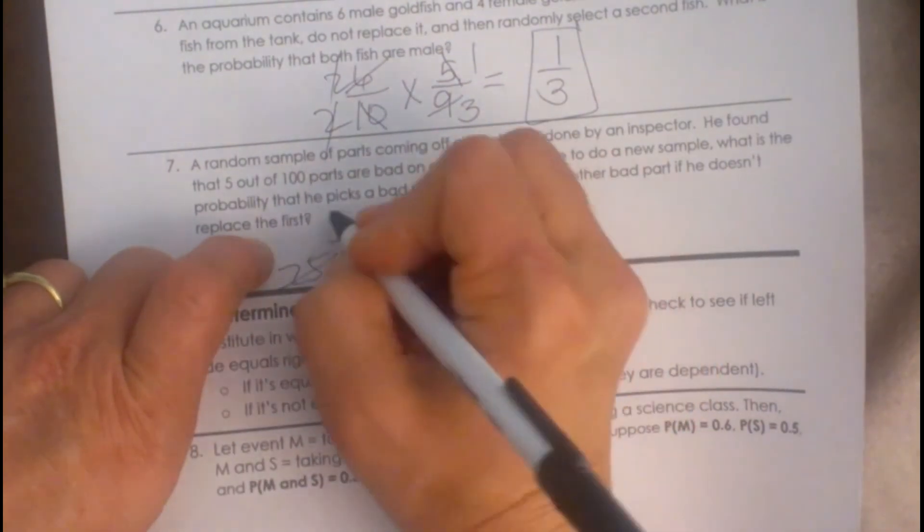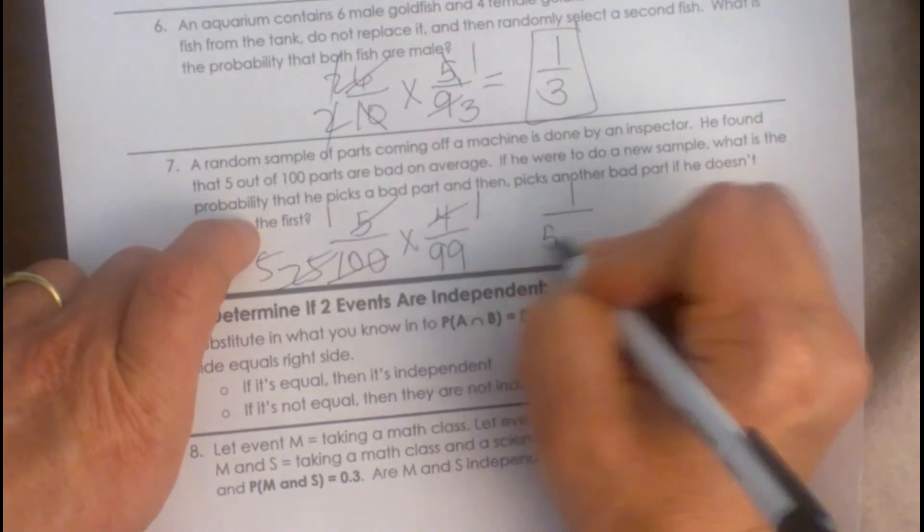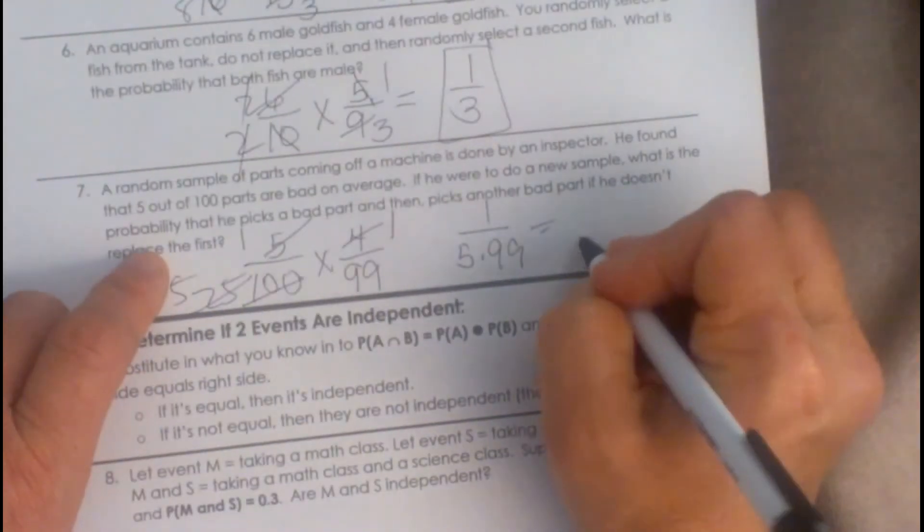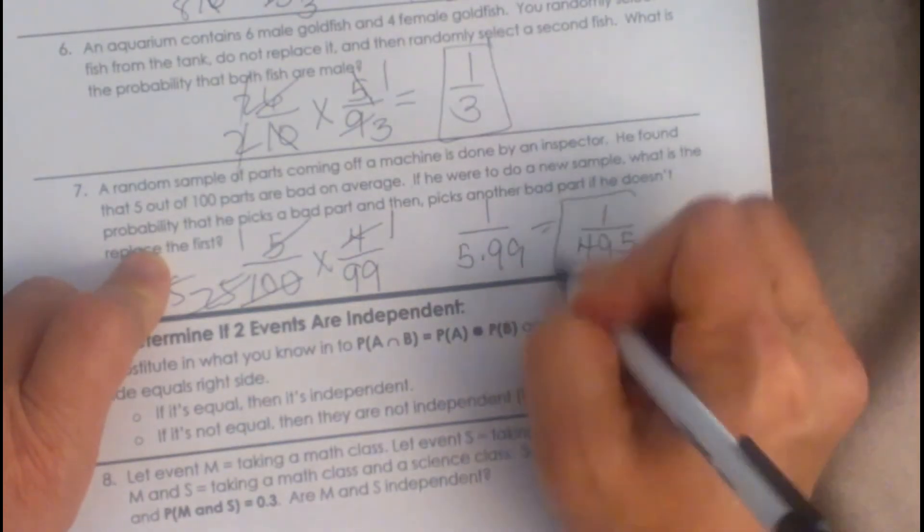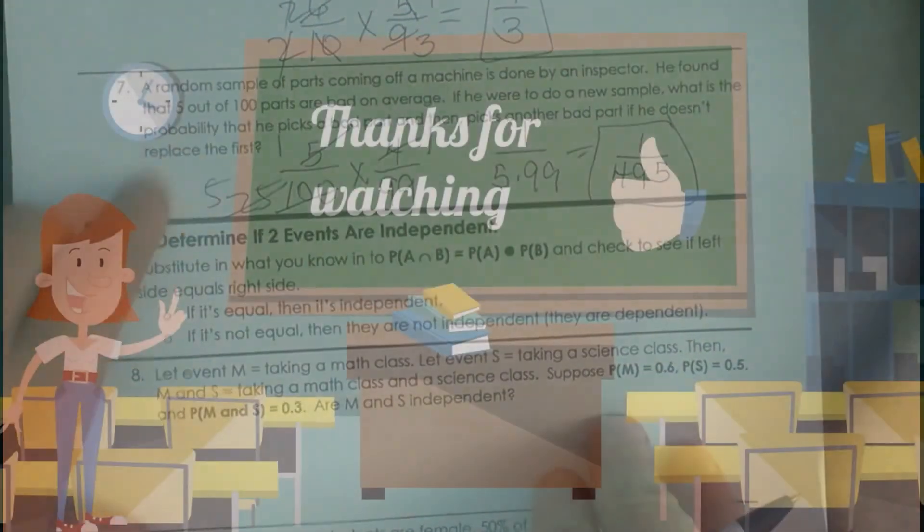So that's 1 out of 5 times 99, and 5 times 99 would be what, 495, out of 1. There you go. So 1 out of 495 times that would happen.